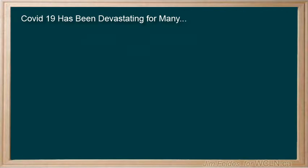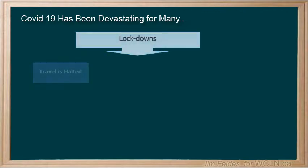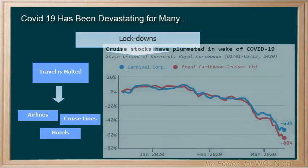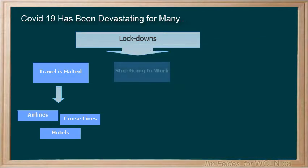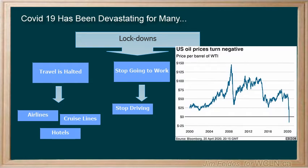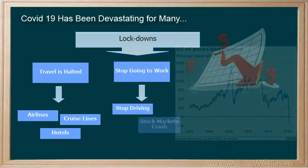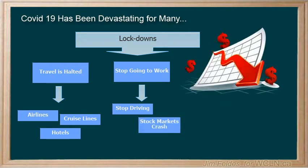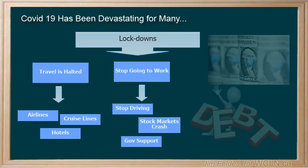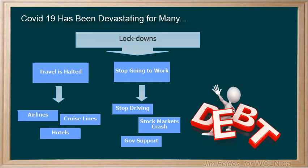Here are a few of those outcomes. Travel was halted, planes were grounded, cruise ships sat idle, and hotels were empty. The stocks in those companies nosedived. People stopped going to work, which means they stopped driving. Oil prices plummeted and even went negative for the first time ever. With the economy shutting down, stock markets crashed. Governments quickly started borrowing money to hand out to people stuck at home, racking up huge deficits we'll be saddled with for years.